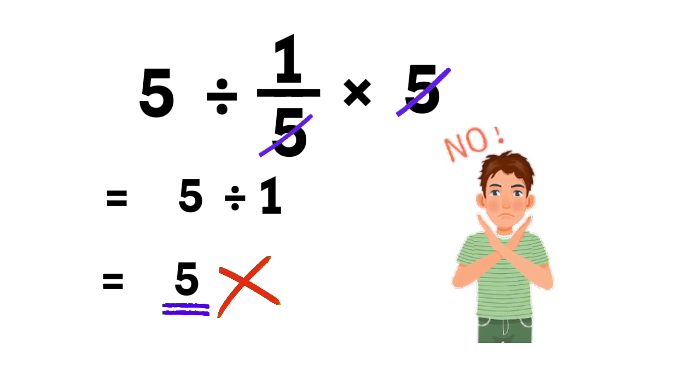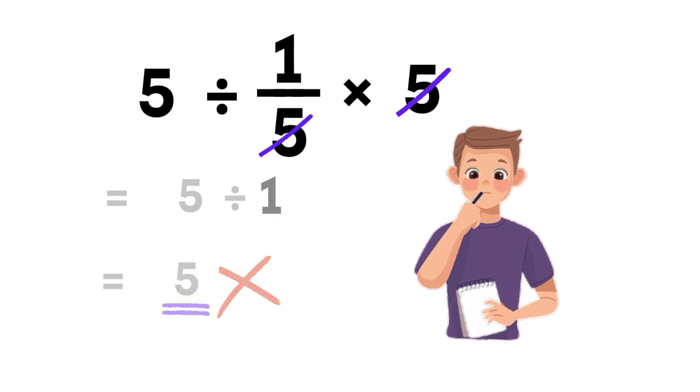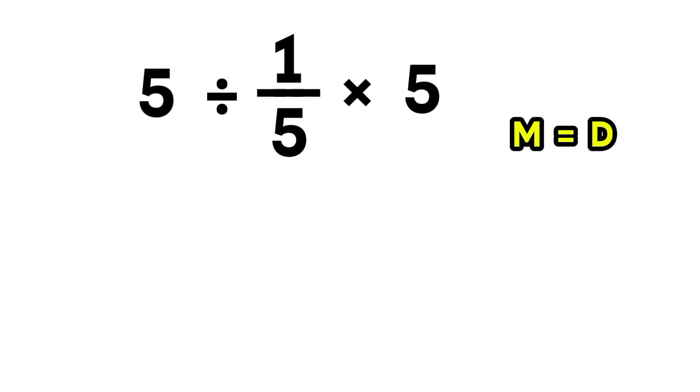And here's where most people don't even realize they made a mistake. Let me show you exactly why. Remember the golden rule of operations. Multiplication and division have equal priority. That means neither one is stronger. We don't get to choose whichever we like first. We always go from left to right, just like reading a sentence. And this tiny detail changes everything.